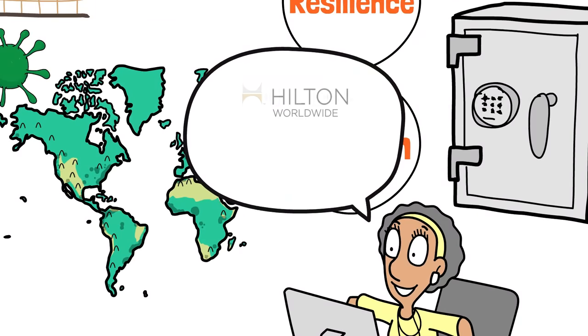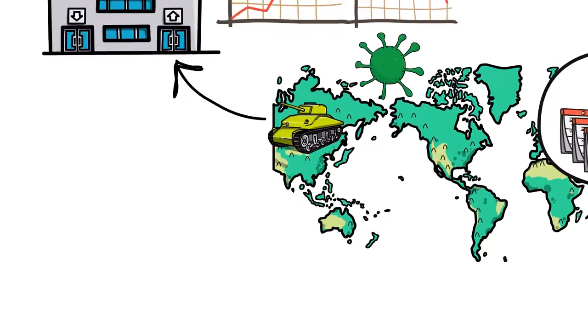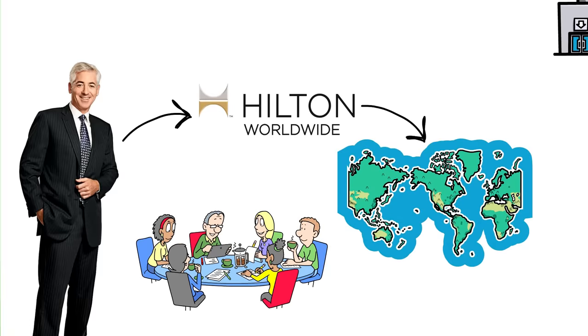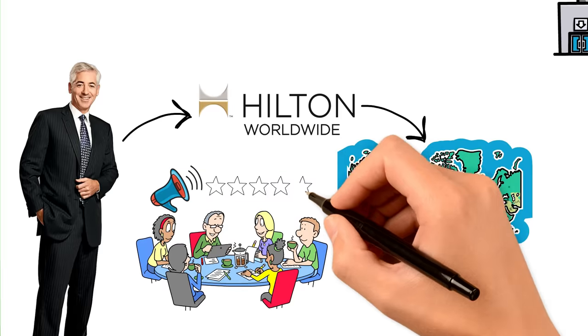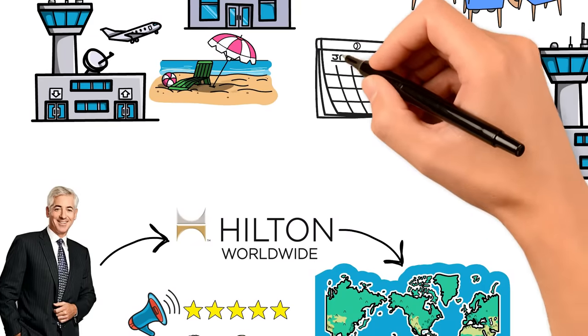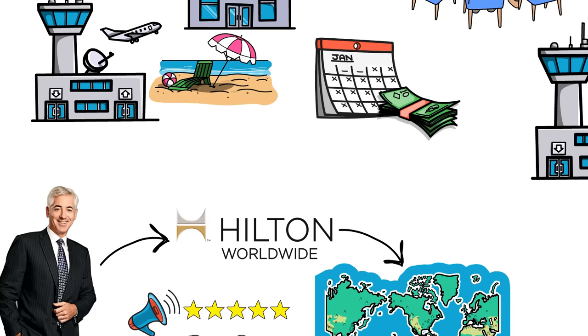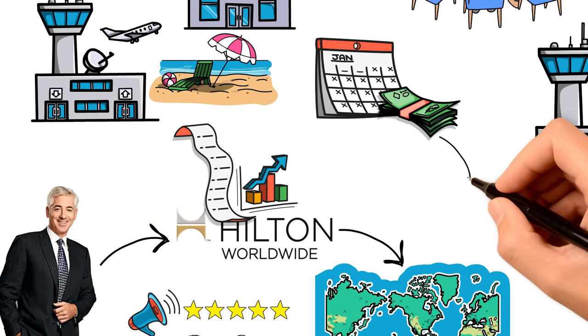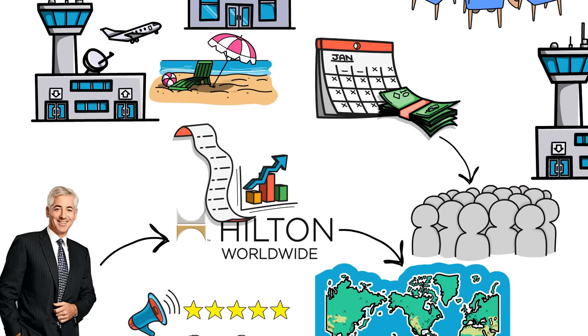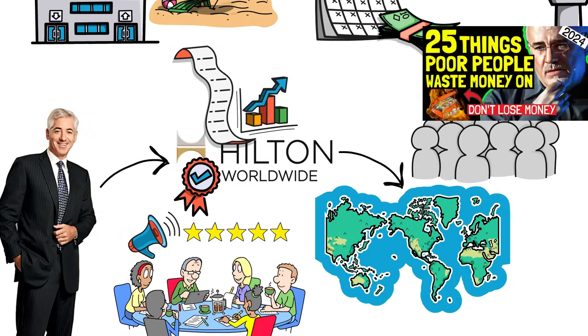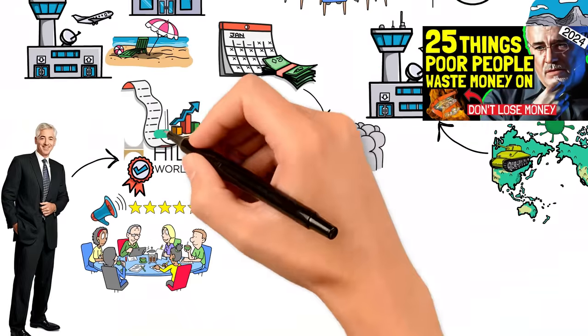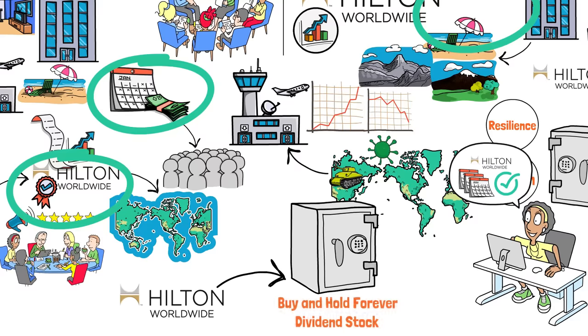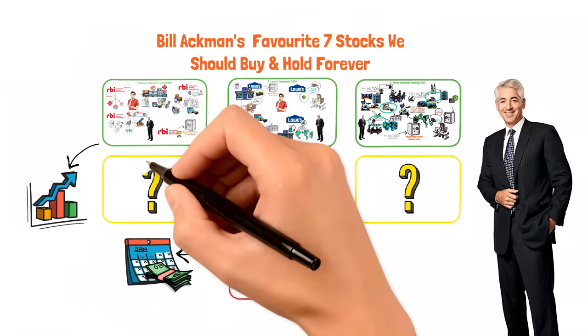This resilience is exactly what you want to see in a company when you're thinking about long-term investments. Ackman's interest in Hilton also highlights the company's commitment to expanding its global footprint and enhancing its brand portfolio. With a focus on strategic growth areas, including emerging markets and lifestyle brands, Hilton is well-positioned to capture future travel demand. Now let's talk about those dividends. Hilton's approach to shareholder returns is as thoughtful as its approach to hospitality. By maintaining a strong balance sheet and focusing on sustainable growth, Hilton aims to provide steady and growing dividends to its investors. This makes Hilton a compelling pick for those looking to add a touch of luxury to their dividend stock portfolio. With its proven track record, strategic growth initiatives, and commitment to shareholder returns, Hilton embodies the qualities Ackman looks for in a buy-and-hold-forever dividend stock. It's not just about the returns today. It's about being a part of a brand that's shaping the future of how we explore the world.